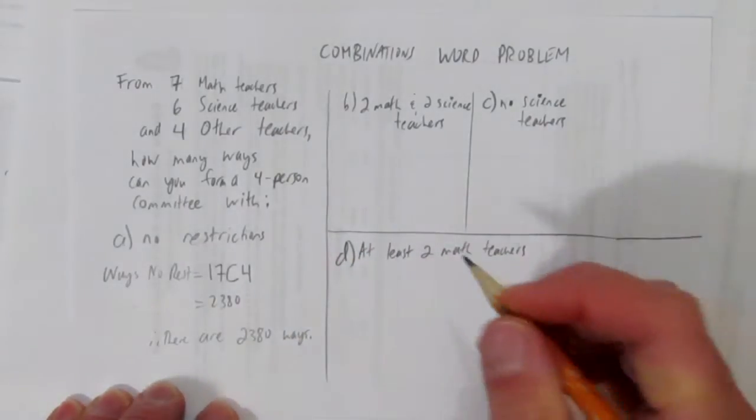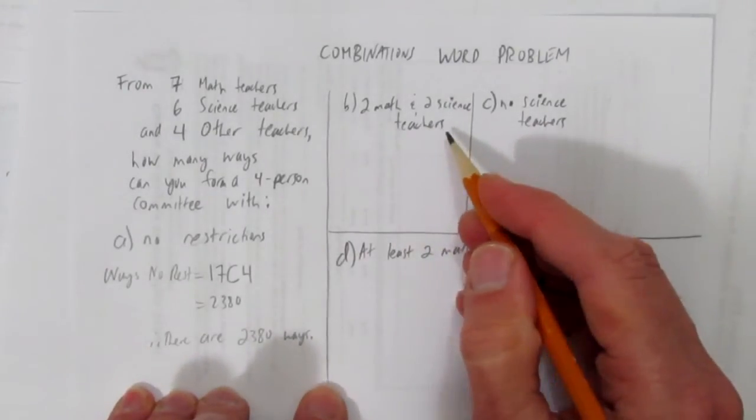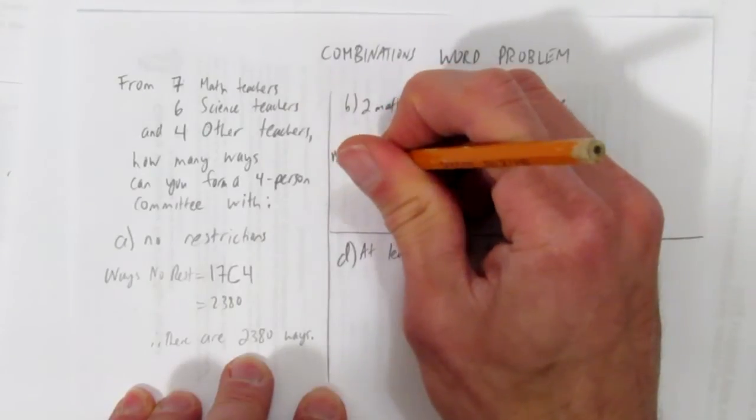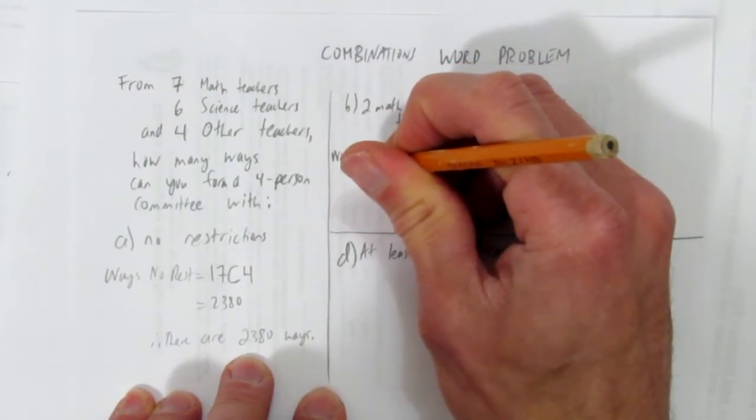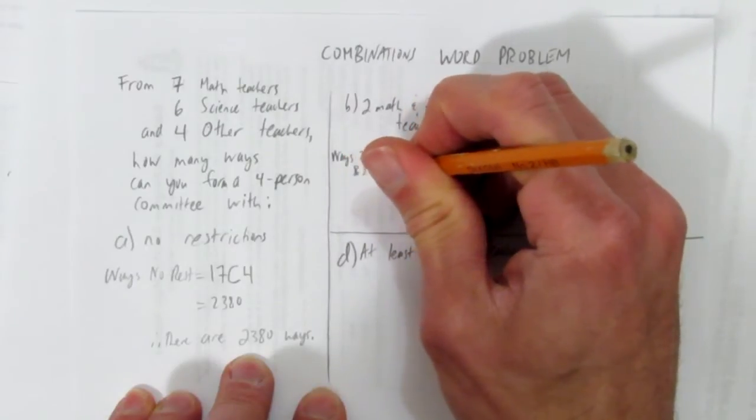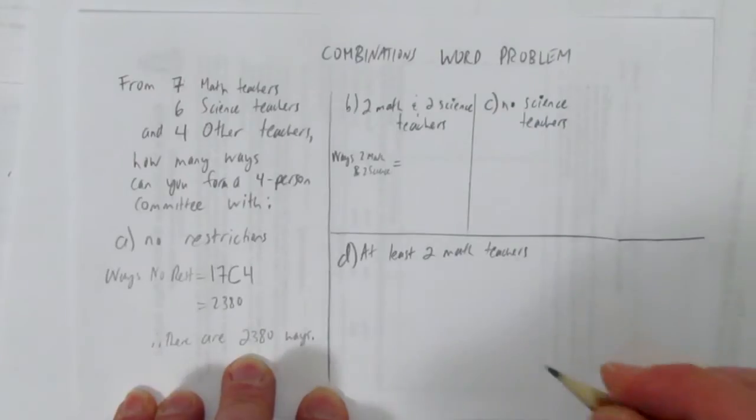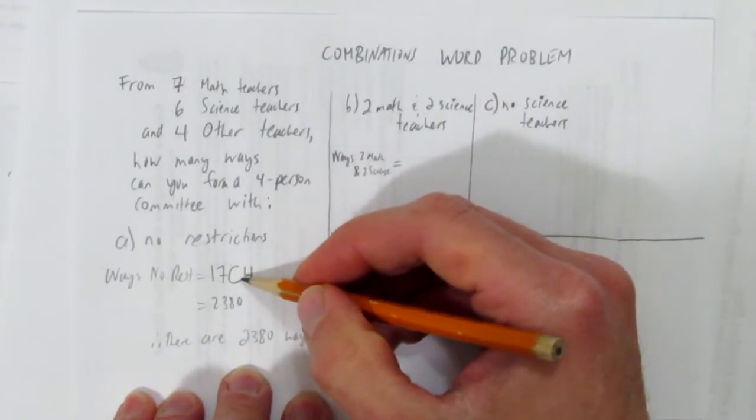Let's make it a little trickier, but not hard. Suppose you have to pick two math and two science teachers. Then the ways where you have two math and two science, we just have to be a little more careful. We can't just go seventeen choose four.